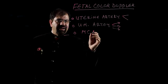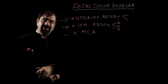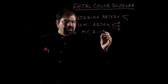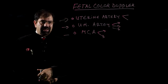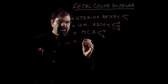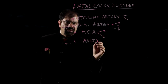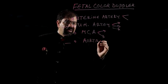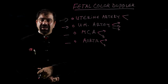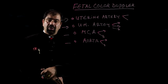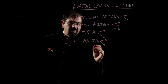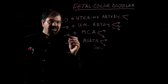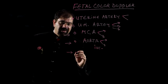Then the middle cerebral artery — how to take it, what ultrasound section to use, and what is normal versus abnormal. Then the aorta — how to take it, where to take it, shown on patients, and what is normal and abnormal flow. Additionally, we can look at the inferior vena cava — how to take it, what is normal, and what is abnormal.